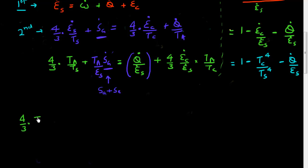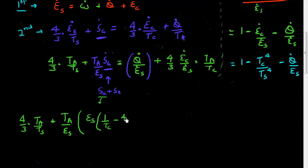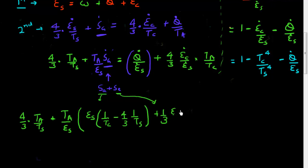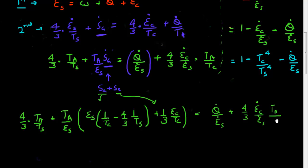Rewriting the equation with this added entropy, I get a (4/3) × TA/TS term, plus a TA/ES term. Then for the net entropy generation, I include the entropy due to absorption — given by ES × (1/TC − (4/3)/TS) — plus the extra entropy associated with the emission process, which is (1/3) × EC/TC. This equals Q/ES, which is the term needed for calculating efficiency, plus another term (4/3) × EC/ES × TA/TC.